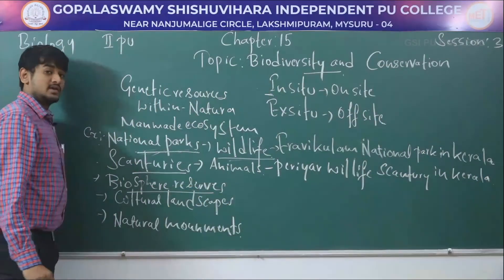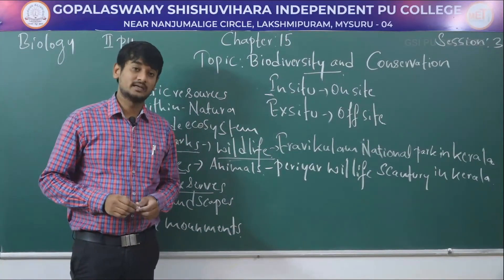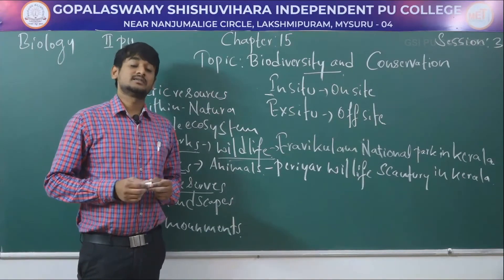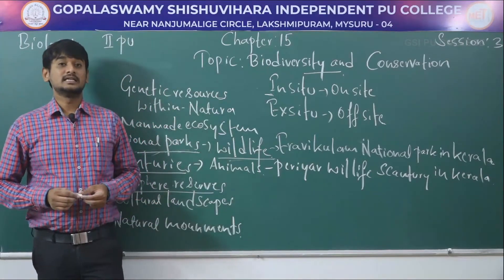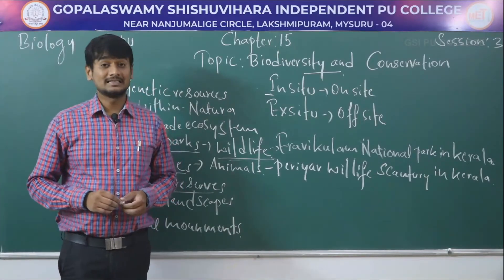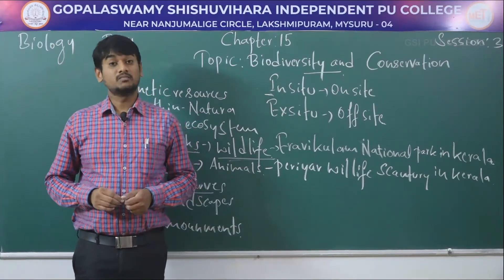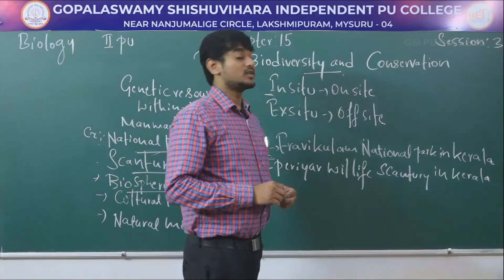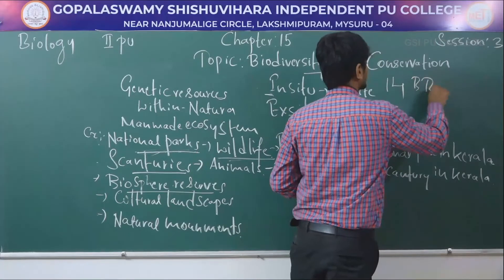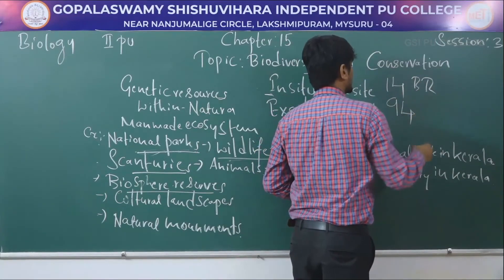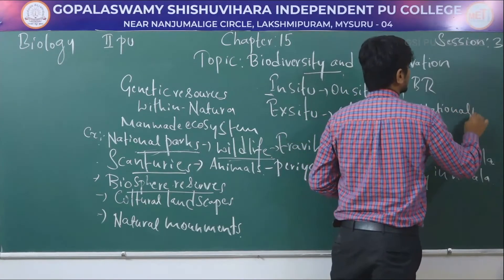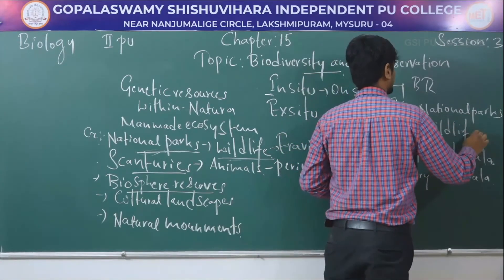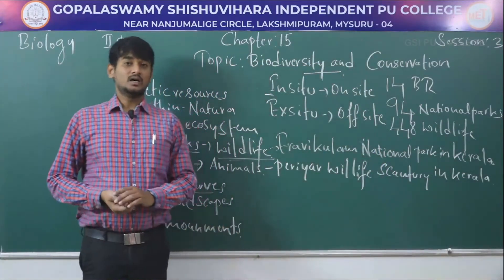The next one is biosphere reserves — areas of land and coastal ecosystems for conservation and sustainable use. Examples include sacred groves in Khasi and Jaintia hills in Meghalaya, Aravalli hills of Rajasthan, Western Ghats of Karnataka and Maharashtra, and Sarguja district in Madhya Pradesh. India has 14 biosphere reserves, 94 national parks, and 448 wildlife sanctuaries. This is all about in-situ conservation.